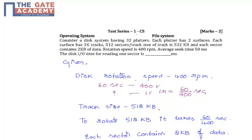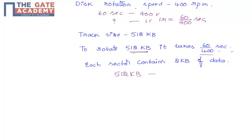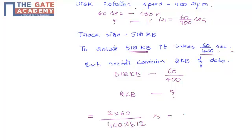Given track size is 512 KB and to rotate 512 KB it takes 60 by 400 seconds. Each sector contains 2KB of data. So for 512 KB if it takes 60 by 400 seconds, for 2KB how much time will it take? That is 2 into 60 by 400 into 512 seconds, which equals 0.00058 seconds. They asked in milliseconds, so 0.58 milliseconds.